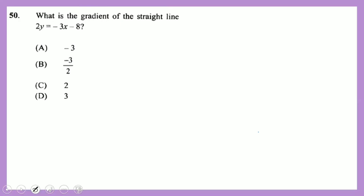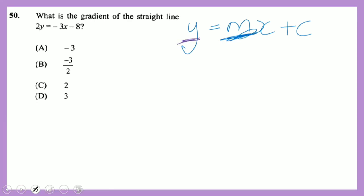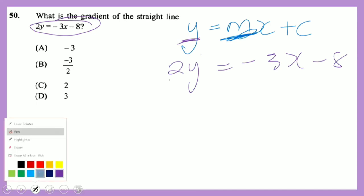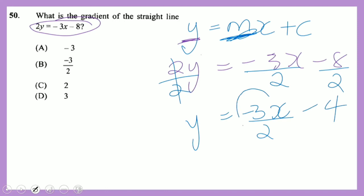Question 50: find the gradient of the line 2y = −3x − 8. Rearrange to the general form y = mx + c by dividing every term by 2: y = −(3/2)x − 4. The gradient is −3/2.